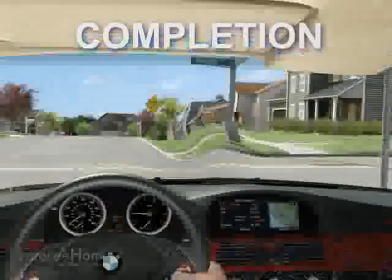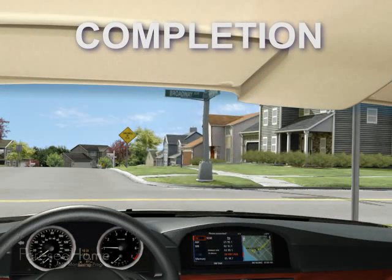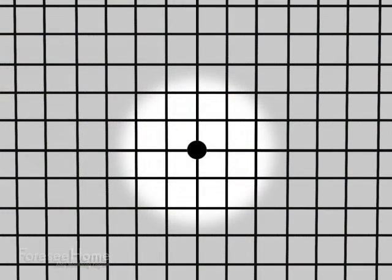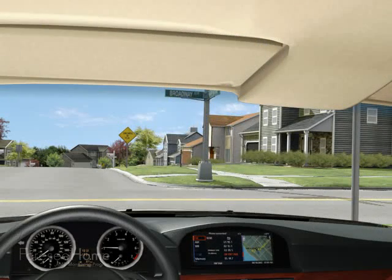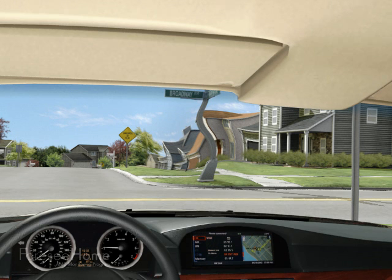Completion occurs when the brain compensates for visual distortion by correcting or completing missing information. When testing with the Amsler grid, a patient's brain will often fill in missing information and fail to notice a visual defect on the grid. By the time the patient notices distorted lines, irreversible vision loss has oftentimes already occurred.